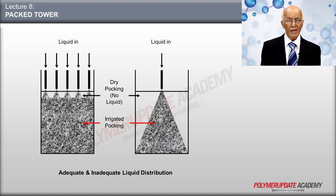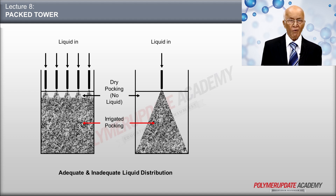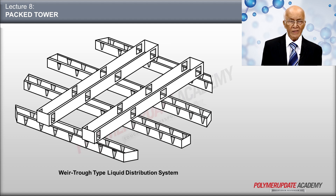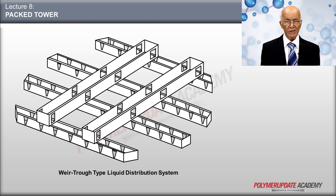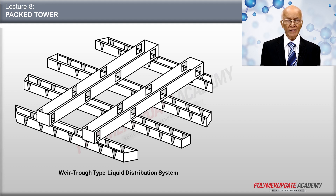A diagram shows that with multiple points of irrigation, practically the entire packed height is irrigated, whereas with a single point of irrigation, a large area of dry packing results. The weir-type liquid distributor has a central trough through which liquid enters and exits through various slots. From these slots, the liquid falls onto another set of distribution trays, from which liquid enters the tower at a number of points, resulting in a properly irrigated tower.